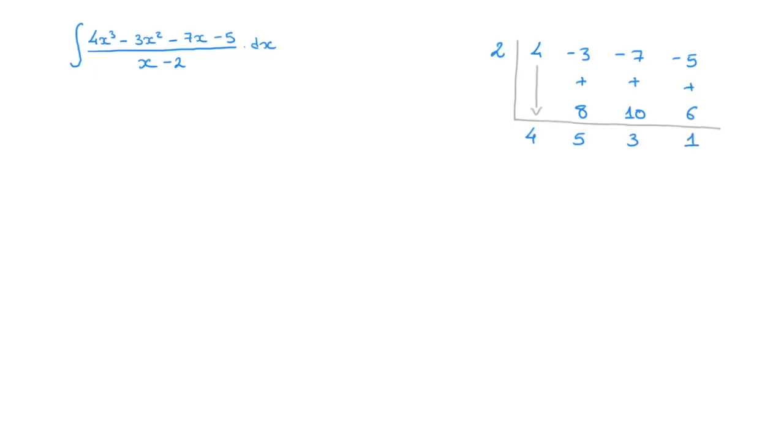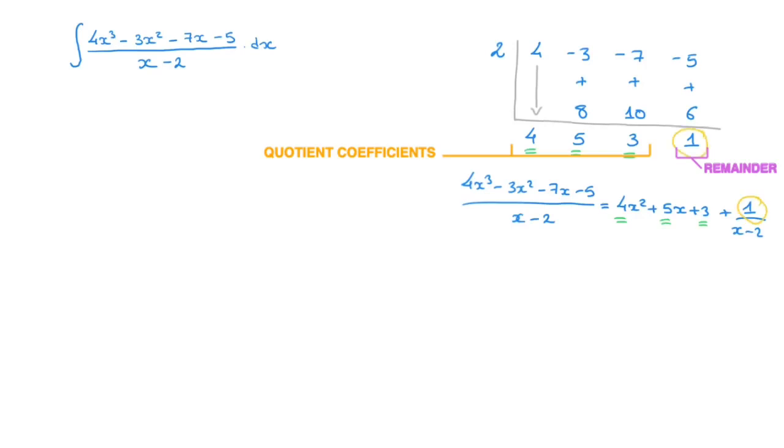Now, here's a quick reminder of how to interpret the numbers that we have at the bottom of the table. These numbers allow us to quickly state that 4x³ - 3x² - 7x - 5 divided by the linear x - 2 equals 4x² + 5x + 3 + 1/(x - 2). Where the 4, the 5, the 3 are the first three numbers at the bottom of the table. The 1, on the other hand, is the last number we have.